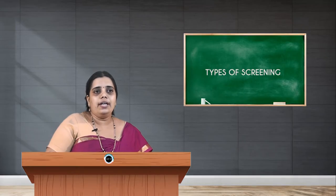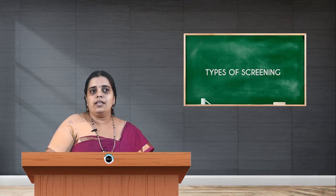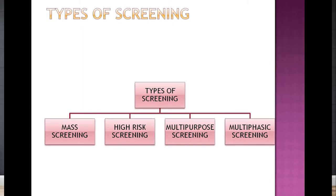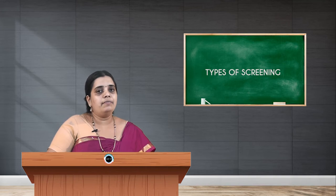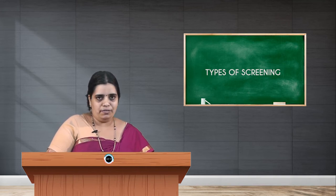There are a few types of screening. The first one is mass screening, high risk screening, multipurpose screening, and multiphasic screening. Along with these four, you might have heard two other words in the previous class: presumptive screening and prospective screening. Presumptive screening was done for case detection, and prospective screening was the name given when you do screening for the control of disease.